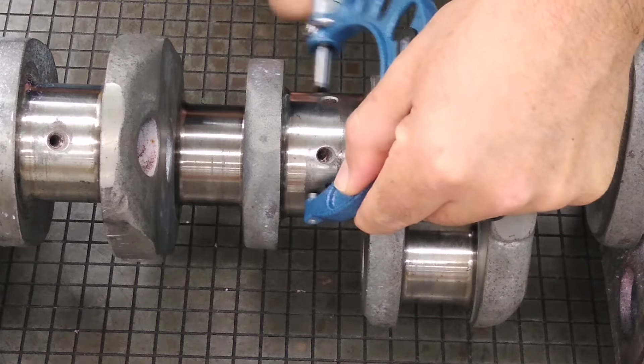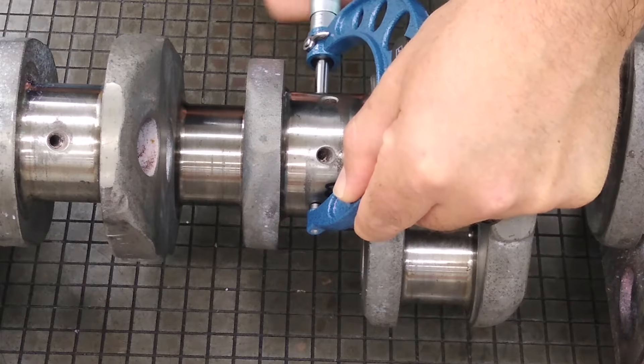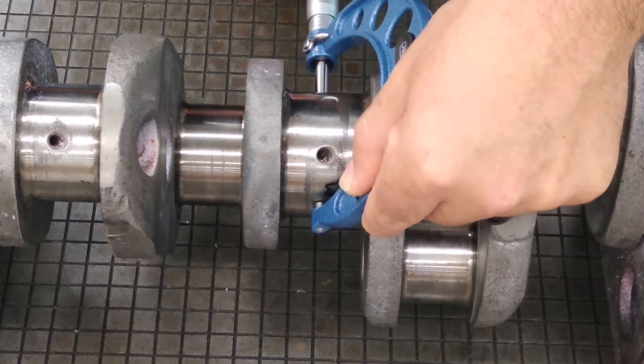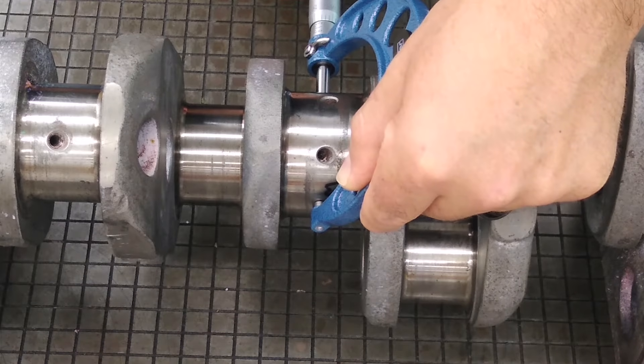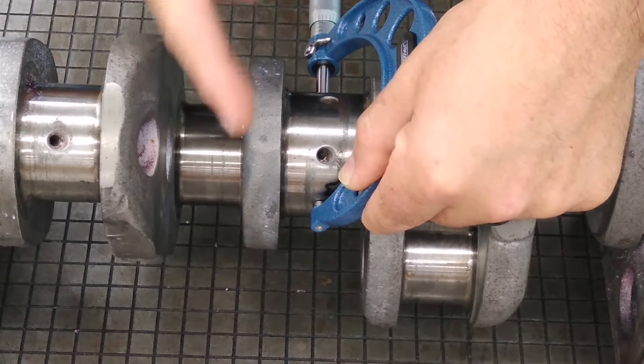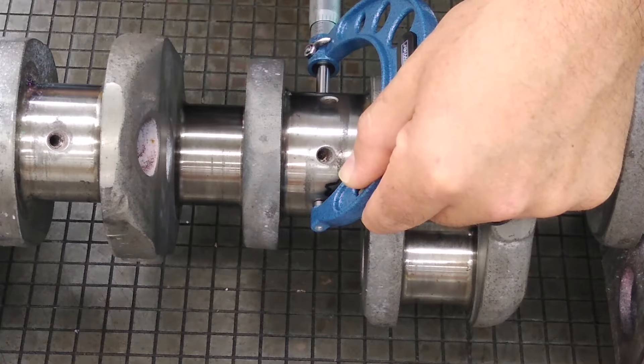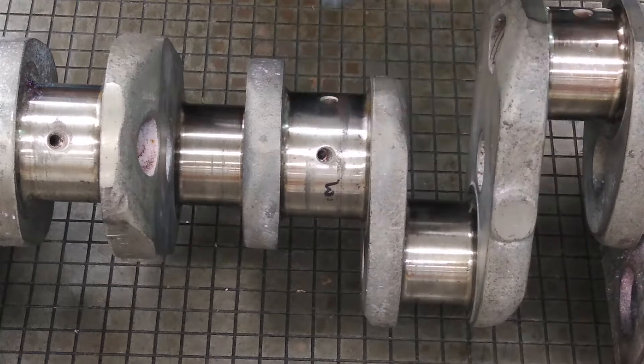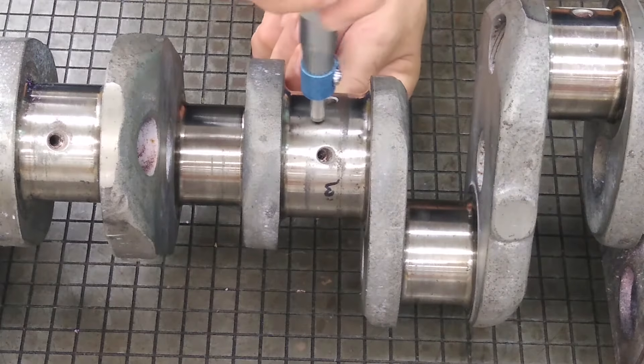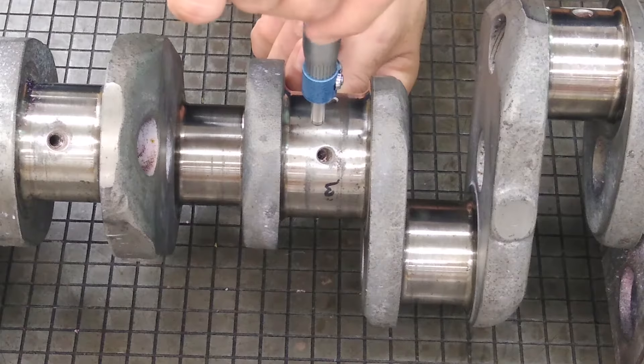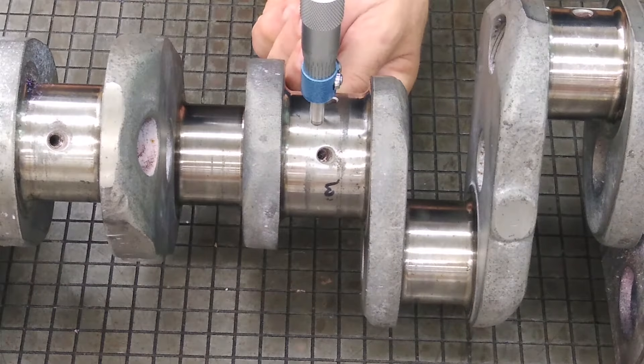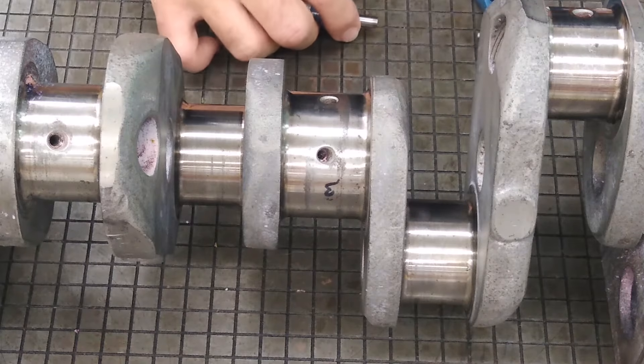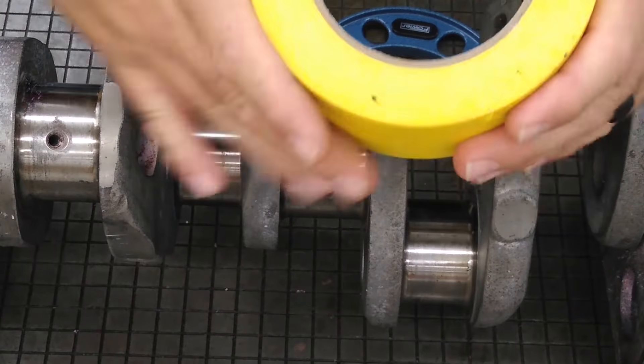Basically, you take a measurement in this direction, write down whatever your reading is, and you take a measurement 90 degrees from your original measurement. Whatever that difference is, is an indication of being out of round.